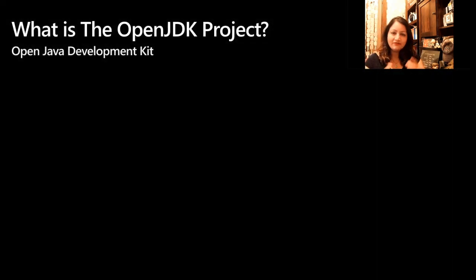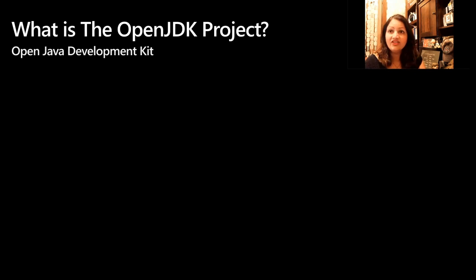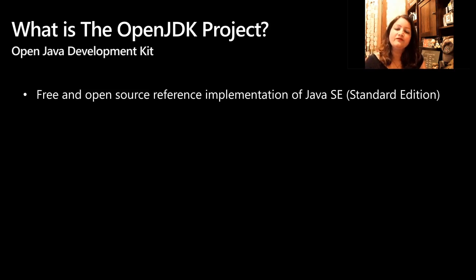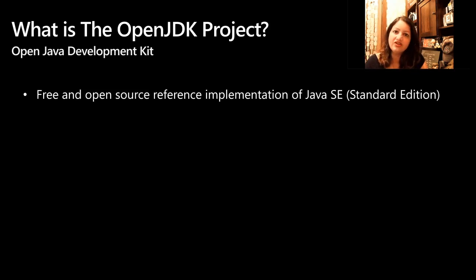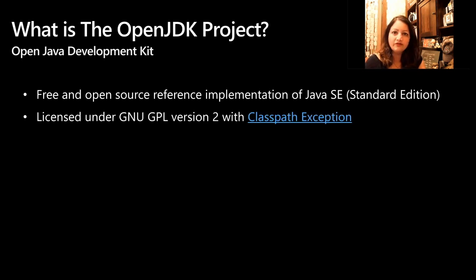Let's first talk about the OpenJDK project itself. The JDK in OpenJDK stands for Java Development Kit. OpenJDK is a free and open source reference implementation of the Java SE, and it's licensed under the GNU GPL version 2 with classpath exception.